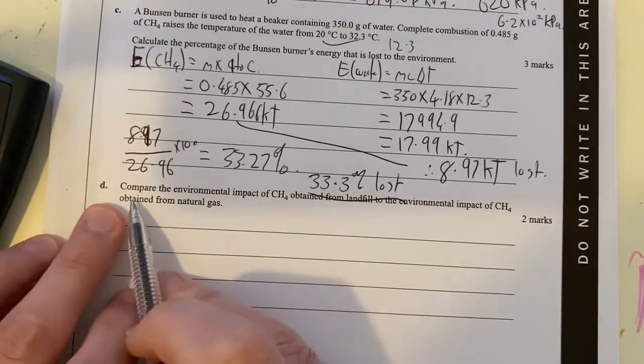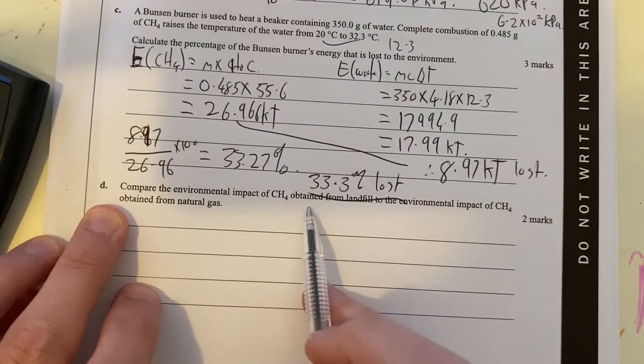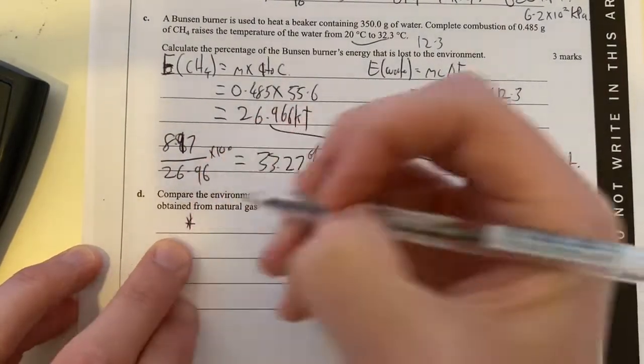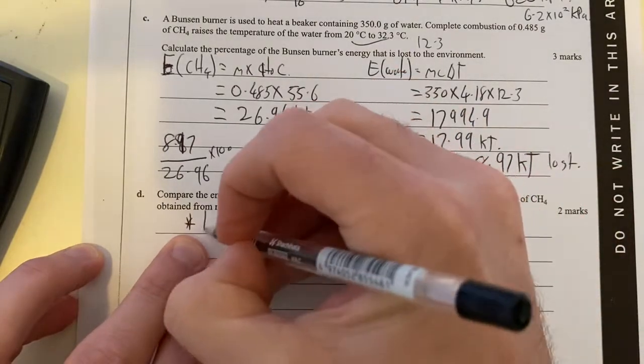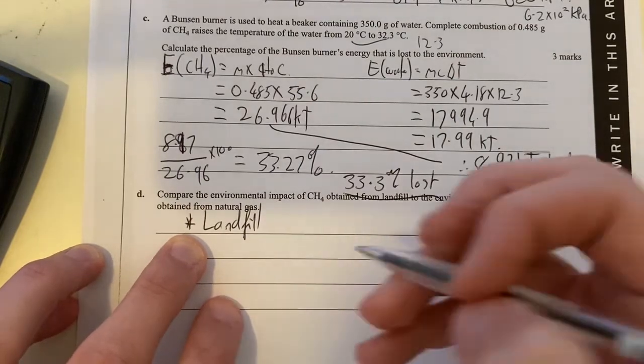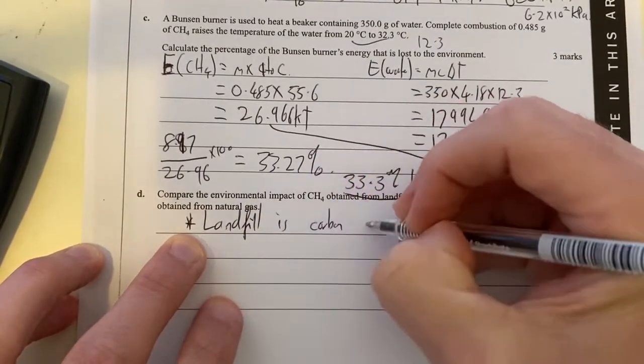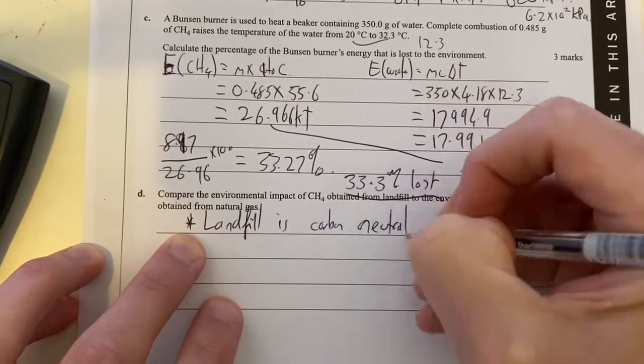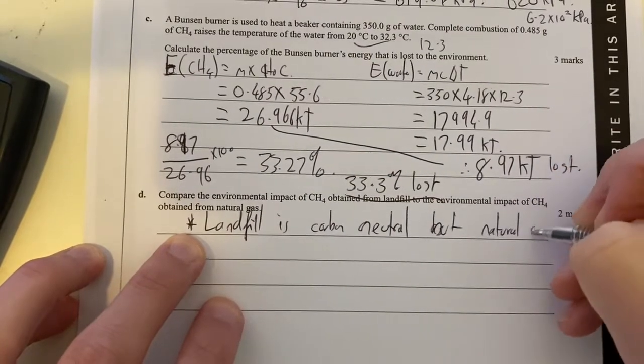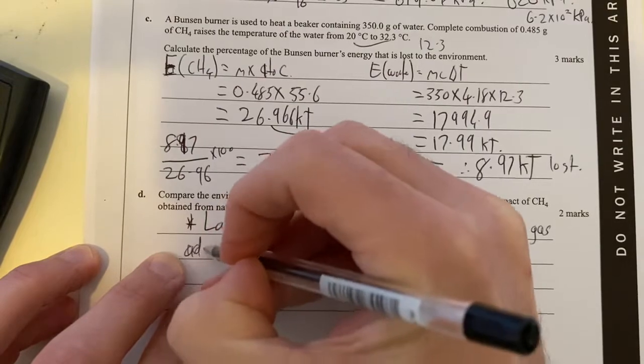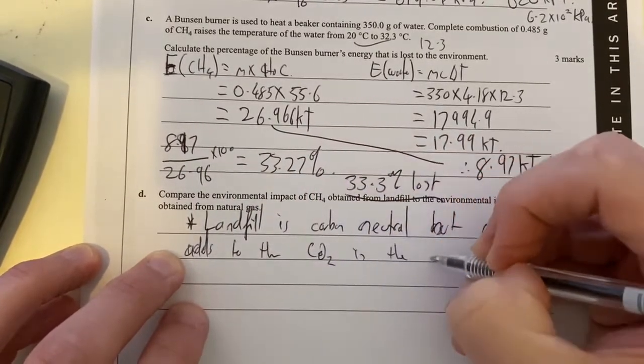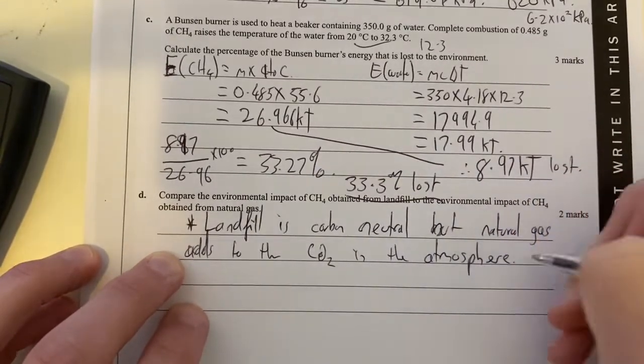Moving on to part D, compare the environmental impact of methane obtained by landfill to that obtained by natural gas. All righty, so what do we have here? So we have landfill will be considered like biogas, so it's going to be mostly carbon neutral, is carbon neutral, but natural gas adds to the CO2 in the atmosphere.